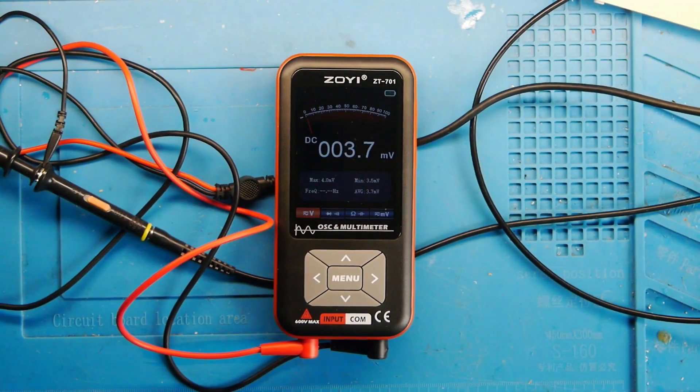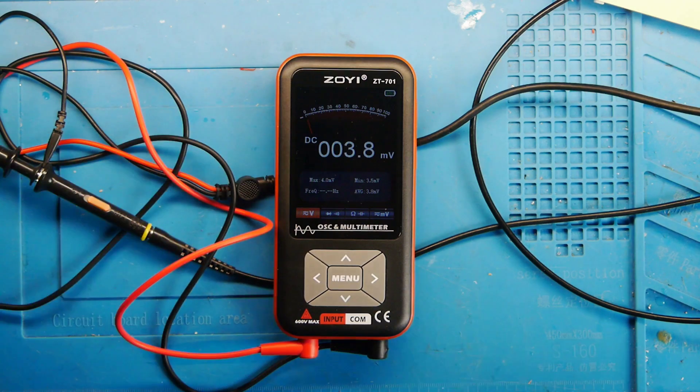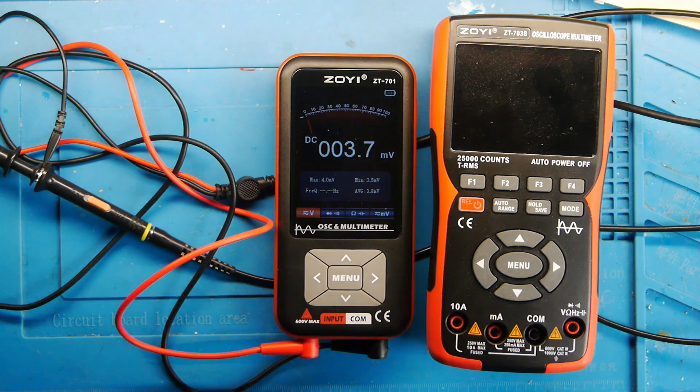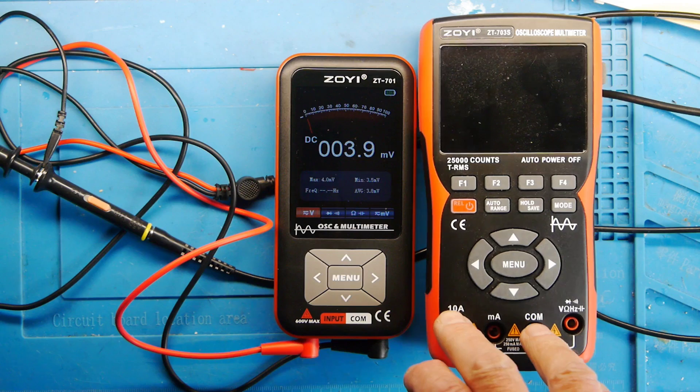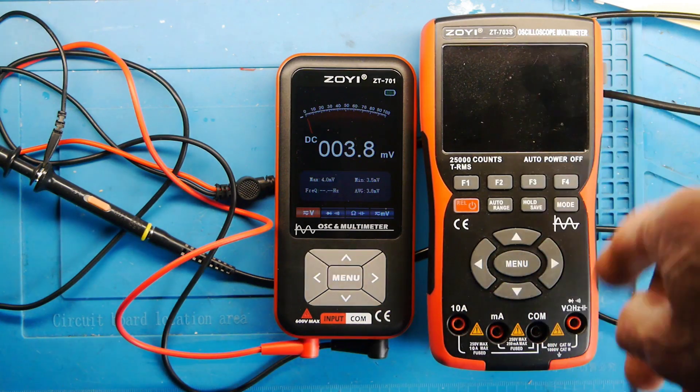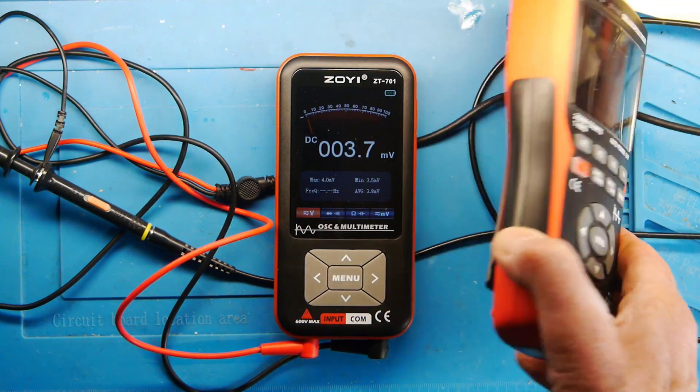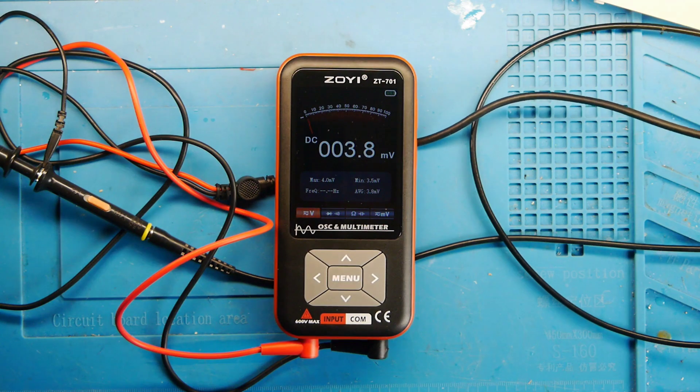Here's the ZT701 on the bench. It's currently started up in multimeter mode. You just press the button on the left here to turn power on. To give you some idea of scale, that's the ZT703, the dual channel oscilloscope meter also made by Zoya. This one is a very nice bit of kit. In fact, Adrian from Adrian's Digital Basement makes good use of his as well. It's quite a bit smaller than that, a little bit more compact.